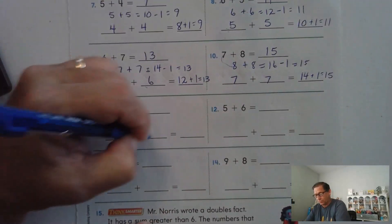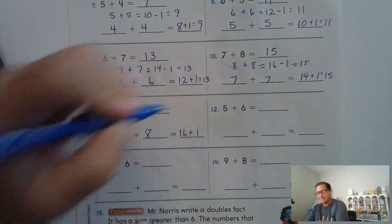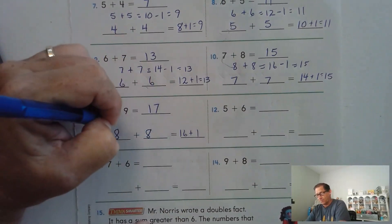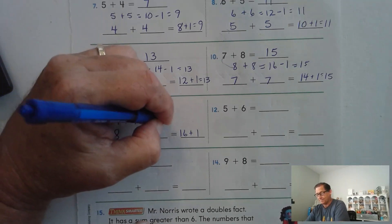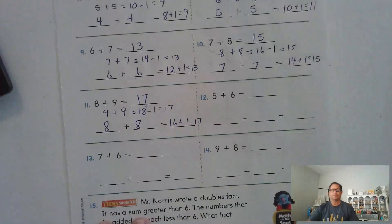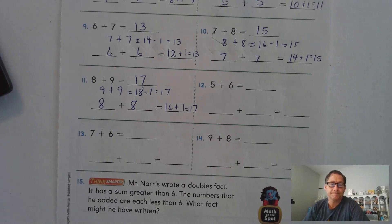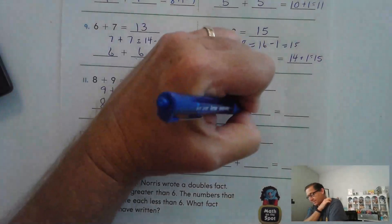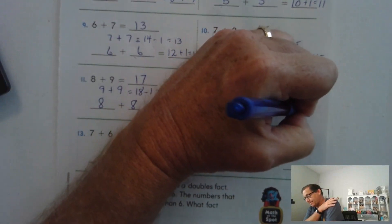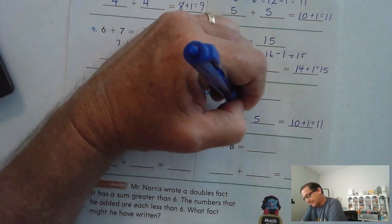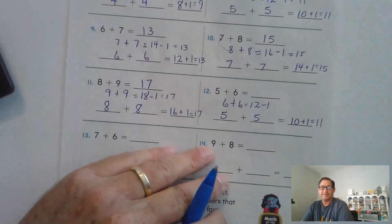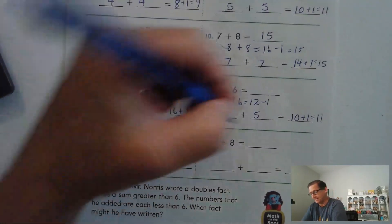8 plus 9: I can use 8 plus 8, which is 16, and add the 1 to get 17. Or I can do 9 plus 9, which is 18, and subtract the 1 to get 17. Also, 5 plus 6 is the same as 5 plus 5 plus an extra 1 — 6 is just 1 more than 5. Or I could say 6 plus 6 is 12 and subtract 1, because 5 is 1 less than 6.